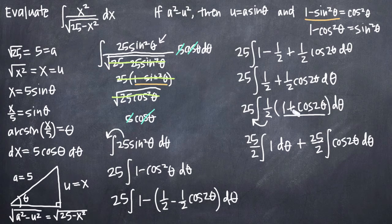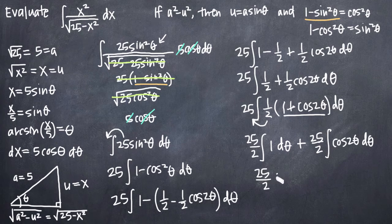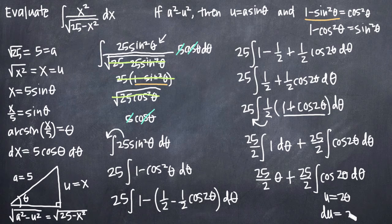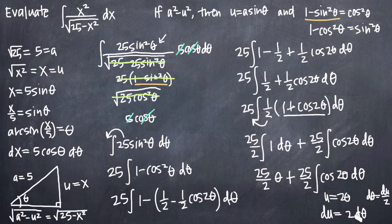We separate the two pieces into two separate integrals. The integral of 1 is just theta, giving us 25 halves theta. That's the end of that integral, plus 25 halves times the integral of cosine of 2 theta d theta. To solve the second integral, we use a u substitution: set u equal to 2 theta. The derivative gives du equals 2 d theta, so d theta equals du over 2.